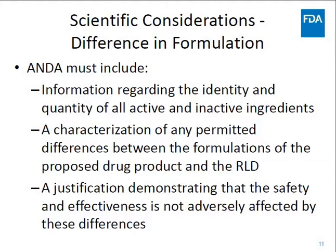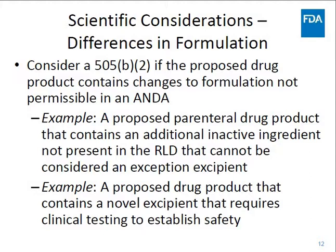FDA has broad discretion to determine whether an ANDA applicant has submitted information sufficient for the agency to reasonably conclude that the proposed drug product's active ingredient is the same as that of the RLD. There are certain differences between a proposed drug product in an ANDA and its RLD that are permissible. An ANDA with certain permitted differences must include information regarding the identity and quantity of all active and inactive ingredients of the proposed drug product, a characterization of any permitted differences between the formulations of the proposed drug product and the RLD, and a justification demonstrating that the safety and effectiveness of the proposed drug product is not adversely affected by these differences. A B2 application should be considered if the proposed drug product contains changes to its formulation that are not permissible in an ANDA.